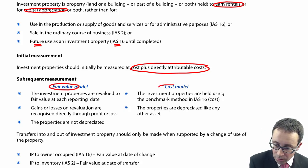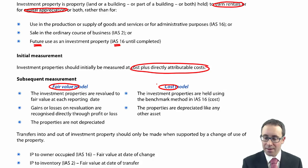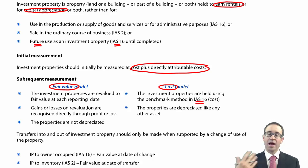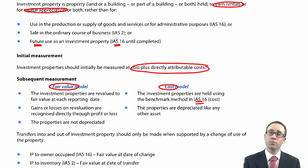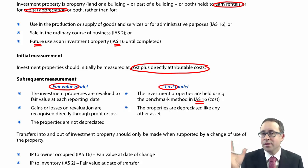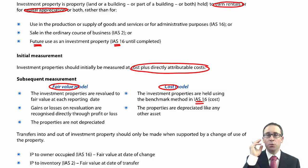The cost model is a bit dull and uninteresting — it's exactly the same as IAS 16: capitalise it at cost and then depreciate it. If you do measure investment property under the cost model, you would disclose the fair value in the notes at the back of the accounts — but I wouldn't worry about that too much.